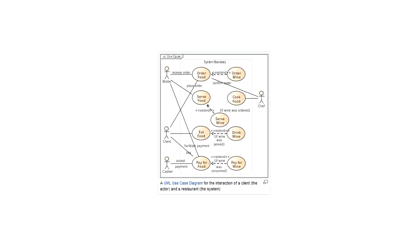Here's an example of a use case diagram modeling some high-level functionality at a restaurant. When I look at this diagram I see circles, and inside the circles I see functionality — ordering wine, serving food, cooking food. I also see icons that look like people labeled as a chef, a waiter, a client, and a cashier. And I see lines connecting the people to the circles or the functionality. These are the basic components of a use case diagram.